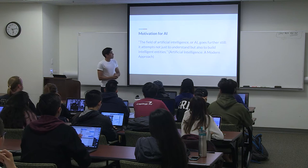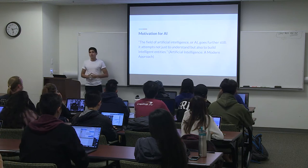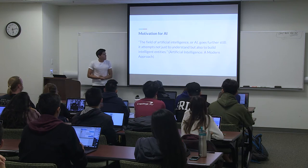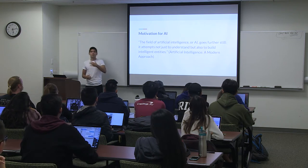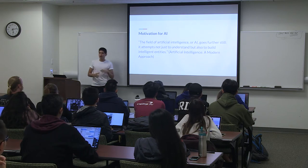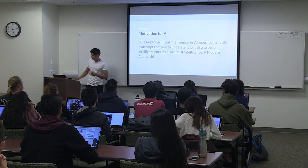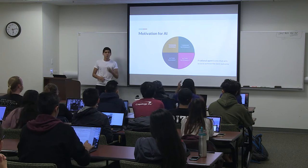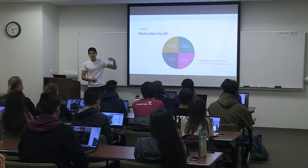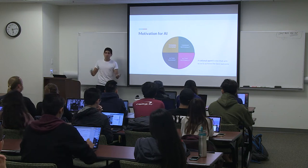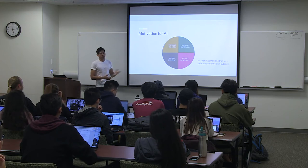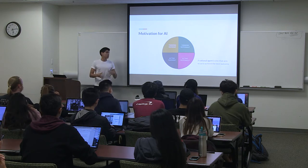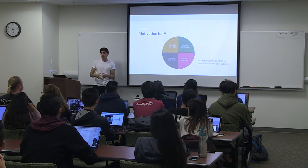For thousands of years, humans have been curious about how human intelligence works — how something intangible is able to affect the world around us. The field of artificial intelligence tries to go one step farther: it tries to create intelligent entities. If you ask someone at Facebook versus someone at Google what artificial intelligence is, you'll most likely get different answers, because researchers have taken different approaches to artificial intelligence over the years.